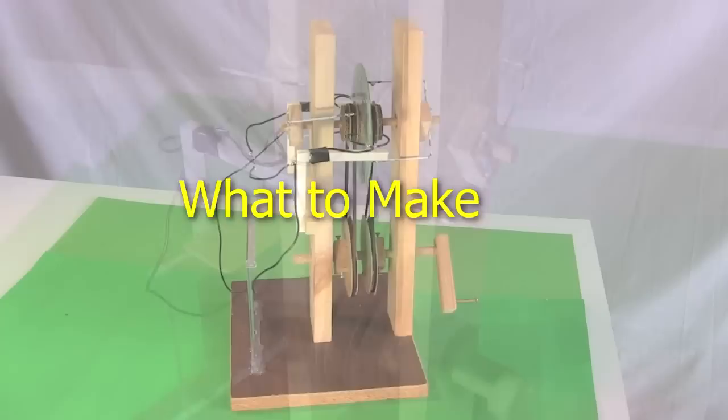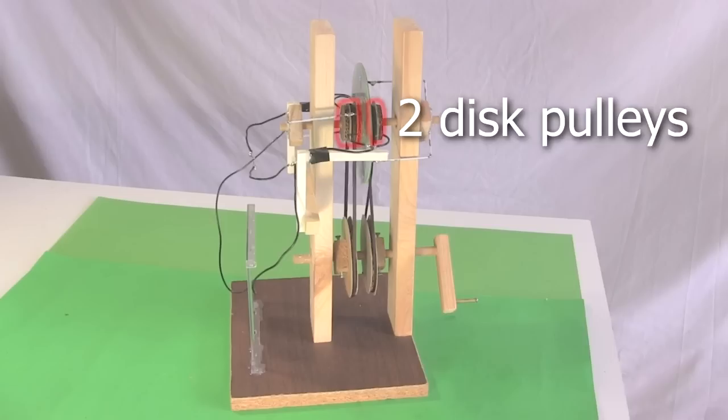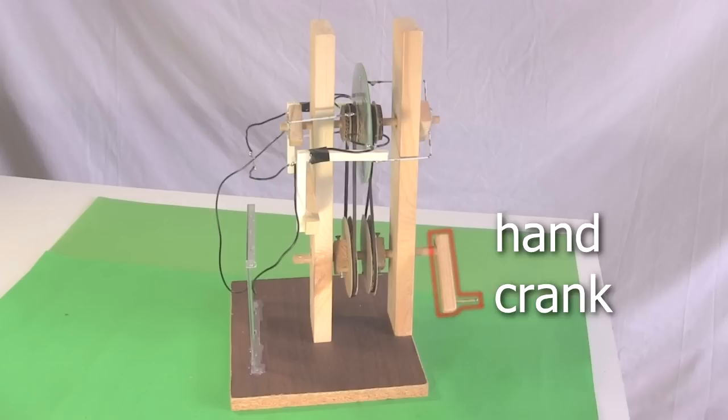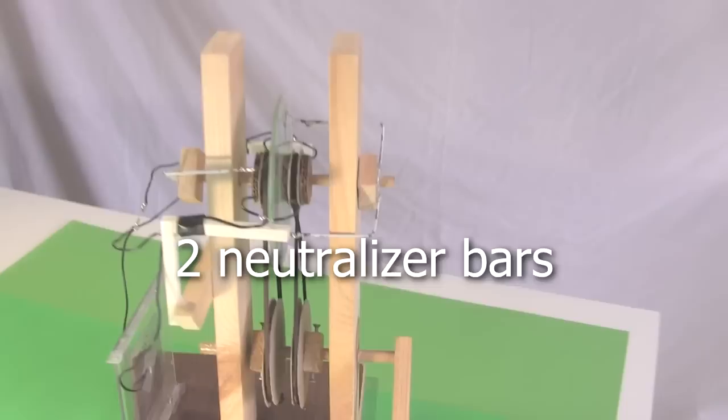The basic components we'll need to make are a support structure, two discs, two lower pulleys to drive it all and two upper pulleys attached to the discs, two shafts for the pulleys and discs to rotate on, a hand crank to turn the shafts, and two belts.